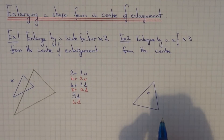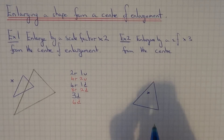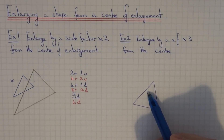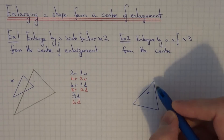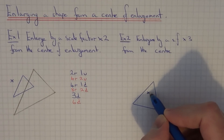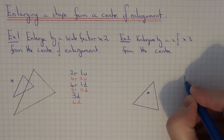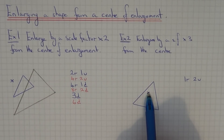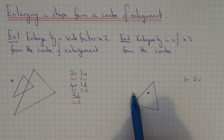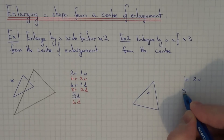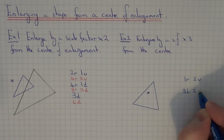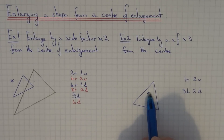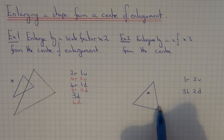That's three times as big, again from the centre of enlargement. This time I've placed the centre of enlargement inside the shape. So first, count the distances from the centre to each of the three corners. The first corner is one right and two up. The next corner is three left and two down. And the final corner is two right and three down.